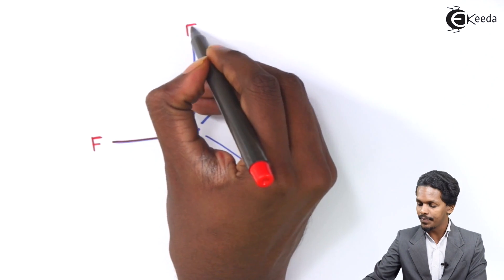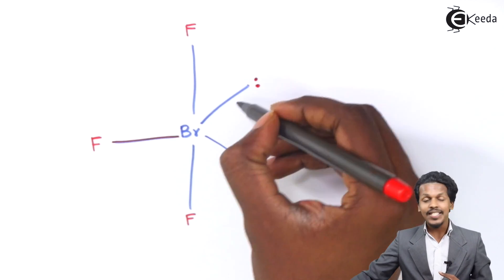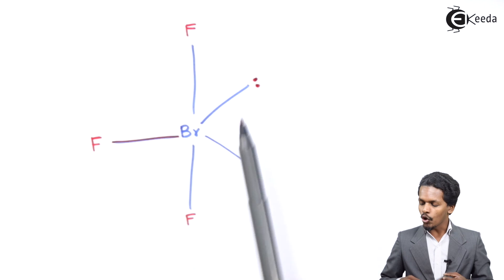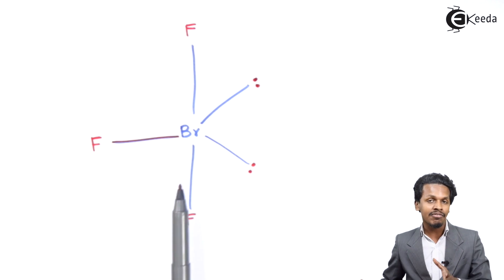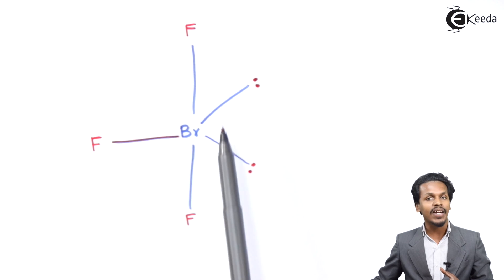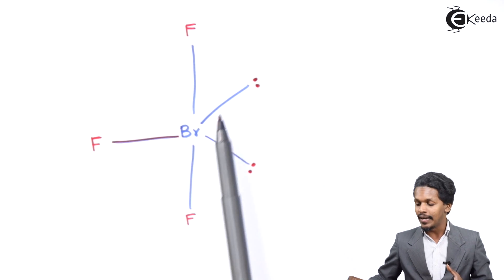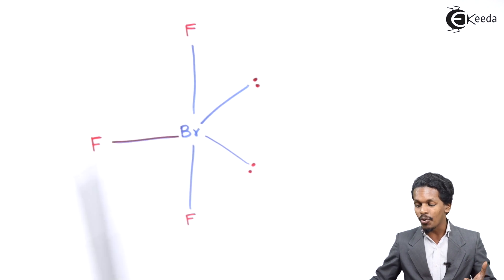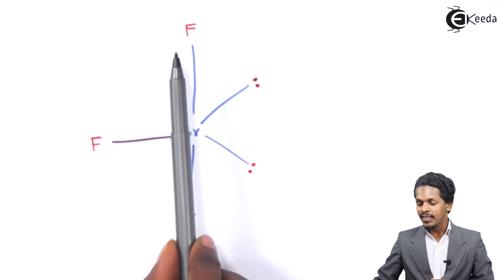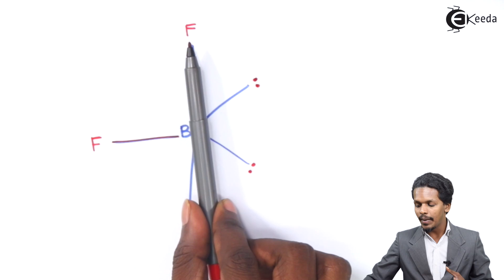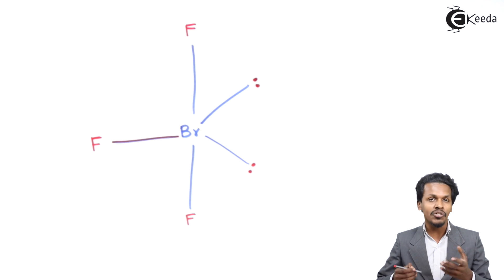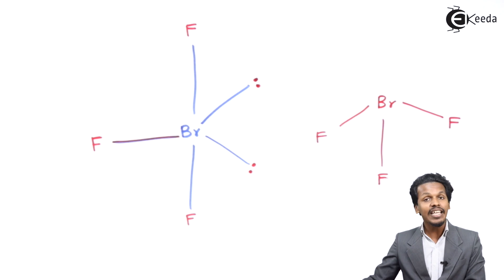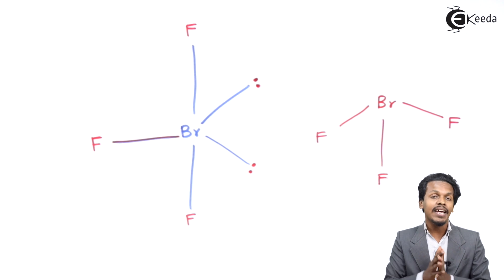Among the five positions in the trigonal bipyramidal geometry, one fluorine atom occupies the equatorial position while the other two fluorine atoms occupy axial positions. The two remaining equatorial positions are occupied by lone pairs of electrons. There is repulsion between these two lone pairs, and lone pair–bond pair repulsion causes the fluorine atoms to bend slightly, resulting in a bent T-shaped molecular structure for BRF3.